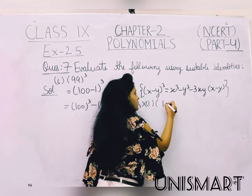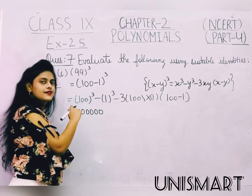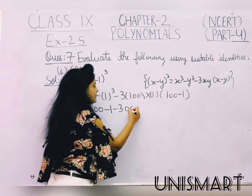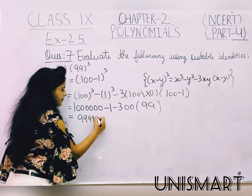Ab hum ise solve karte hain. So 100 ka cube is 10 lakh — yaahan aayengi 6 zeros. 1 ka cube is 1. 3 into 100 is 300, yeh ho jaega minus 300. In bracket 100 minus 1 is 99. Ab hum isme se minus 1 karenge 10 lakh mein se, so yaahan pe aayengi 6 times 9. Ab kya karna hai? Minus 300 into 99.